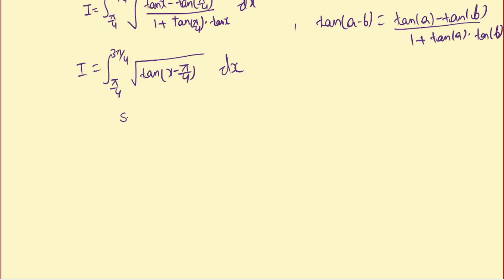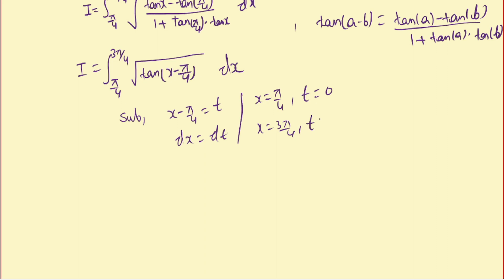Now let's get rid of (x − π/4) by substituting x − π/4 = t, so dx = dt. For x = π/4, t = 0, and for x = 3π/4, t = π/2. So our integral becomes I = ∫ from 0 to π/2 of √(tan t) dt.